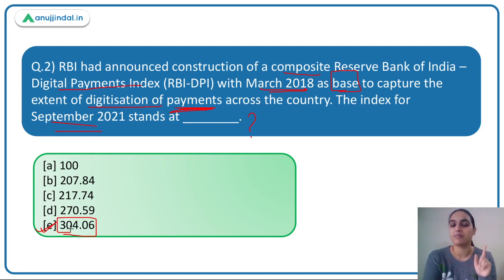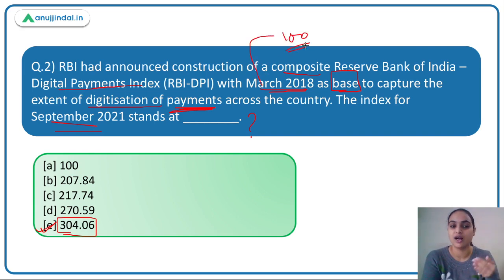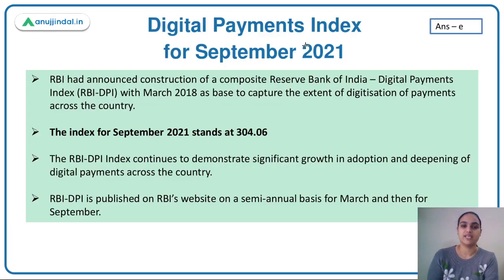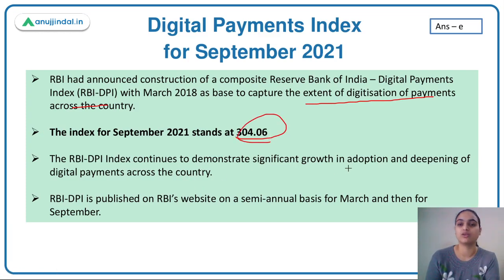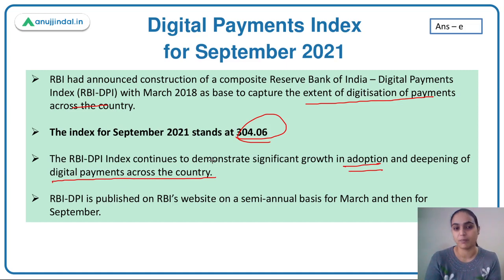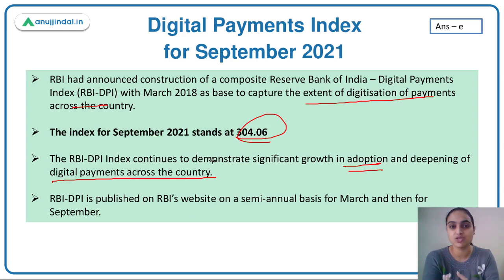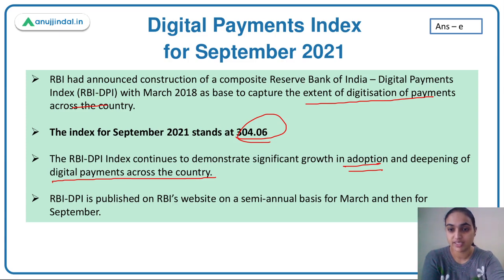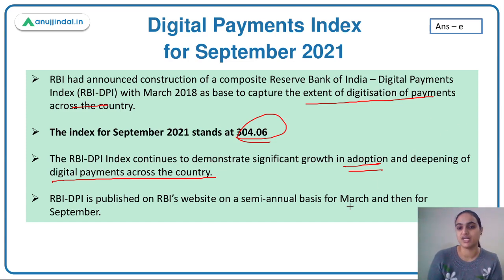When the index was introduced, March 2018 was set as the base year with a value of 100. We can see it has grown from 100 to 304.06, which demonstrates significant adoption of digital payments. This index captures the extent of digitization of payments and demonstrates the growth in adopting and deepening digital payments across the country — across states, cities, and even villages.